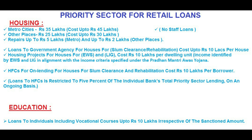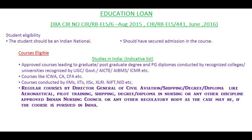Education loan eligibility as per IBA circular dated August 6, 2015 and June 2016: the student should be an Indian national and should have secured admission to an eligible course. Courses eligible for studies in India include graduate, postgraduate degrees and postgraduate diplomas conducted by recognized colleges and universities recognized by UGC, government, AICTE, AIBMS, ICMR, etc. Courses like ICWA, CA, and CFA are also eligible.